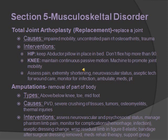Next, amputations — removal of a part of the body. Types include above or below the knee, toe, midfoot, etc. Causes include vascular disease, severe crushing of tissue, tumors, osteomyelitis, and thermal injury. Interventions: assess neurovascular and psychosocial status — psychosocial status is very important because the patient is losing part of their body and will never look or feel the same. Manage phantom limb pain, which is real pain and should be treated with medication. Monitor for complications like hemorrhage and infection. Use aseptic dressing technique and wrap the residual limb in figure-eight elastic bandages after surgical dressing is removed. Give meds, rehab therapy, and refer to a support group.